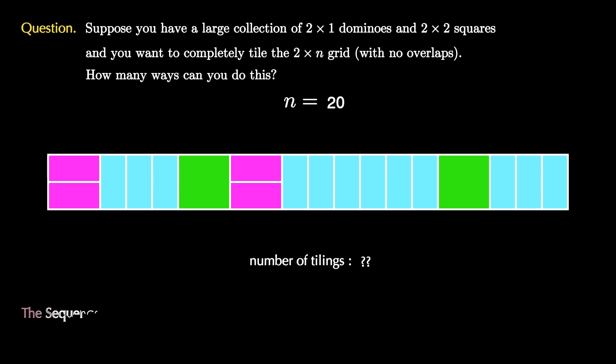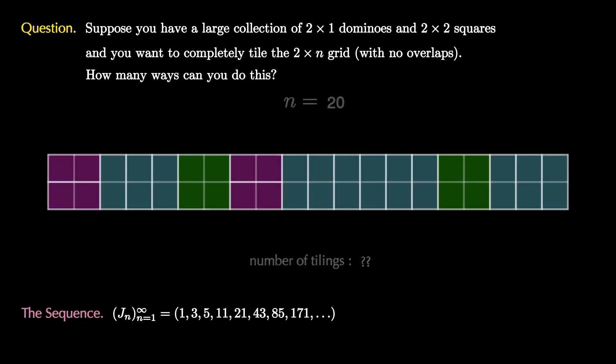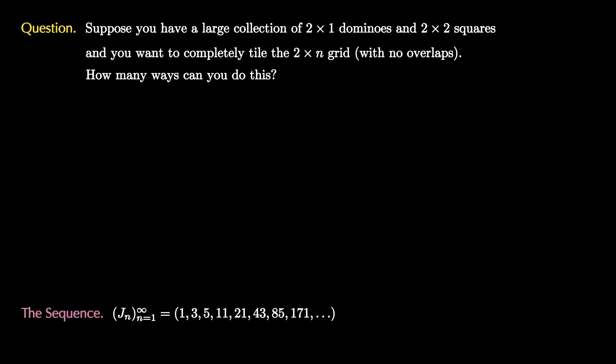If we continue gathering data for this sequence, which we'll call j sub n, we get the numbers 1, 3, 5, 11, 21, and so on pictured here. Let's figure out how to find a recursive formula for these numbers.